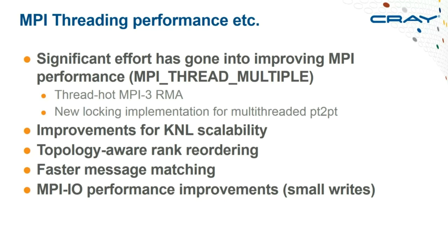Ongoing MPI improvements focus on single-sided remote memory operation performance, particularly from threaded applications. If you use MPI_THREAD_MULTIPLE with multiple threads calling MPI, it's worth trying the latest MPI version. Many improvements were driven by KNL requirements — with large thread counts you need both thread scalability and excellent serial performance in critical MPI code paths. There's also an improved algorithm for matching messages on the receive side — already seen to improve point-to-point performance in real applications.